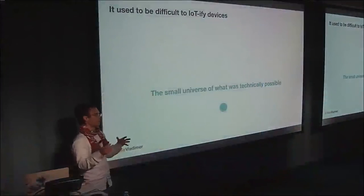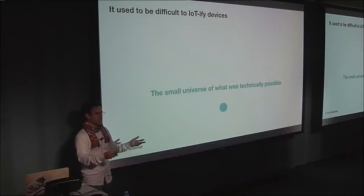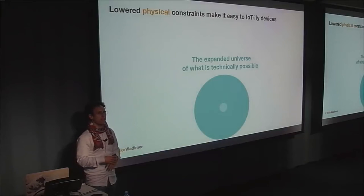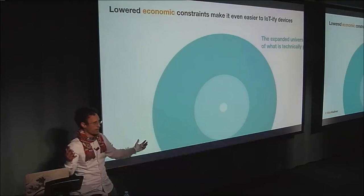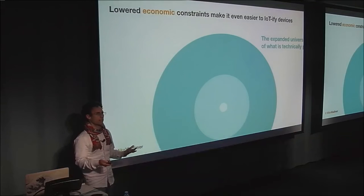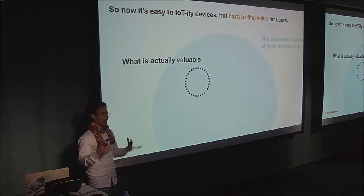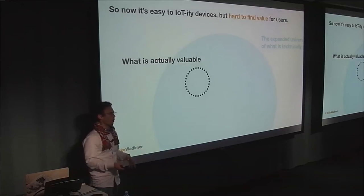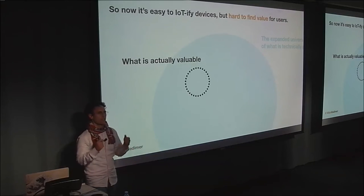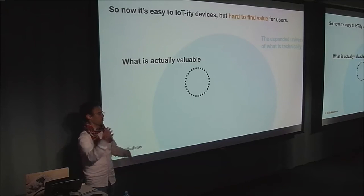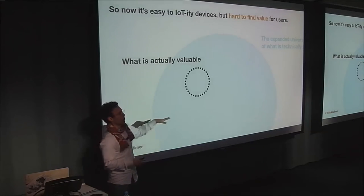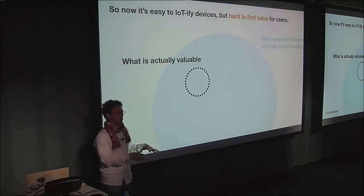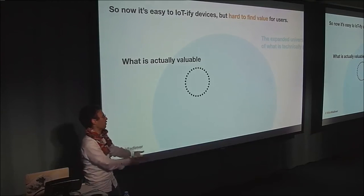It used to be that there was a really small universe of what was technically possible to IoT-ify. But the lowered physical constraints have made that universe grow really fast, and lowered economic constraints have expanded it further. The problem has shifted: it's now really easy to IoT-ify devices, but it's really hard to find high-value problems that are worth IoT-ifying. When you ask why there are disappointing IoT devices in the market, I'd argue they're not in that circle of value — people are building them just because they can, not because it's actually a useful, valuable device to have.